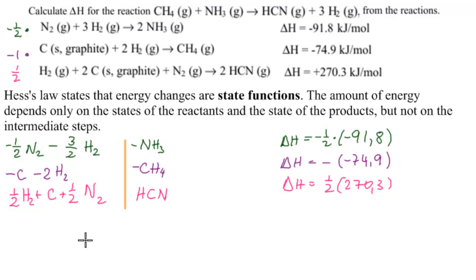So first of all, the odd things out should cancel. Here it goes: minus one half N2 goes with one half N2, and minus C goes with plus C. We should be only left with reactants that are here.